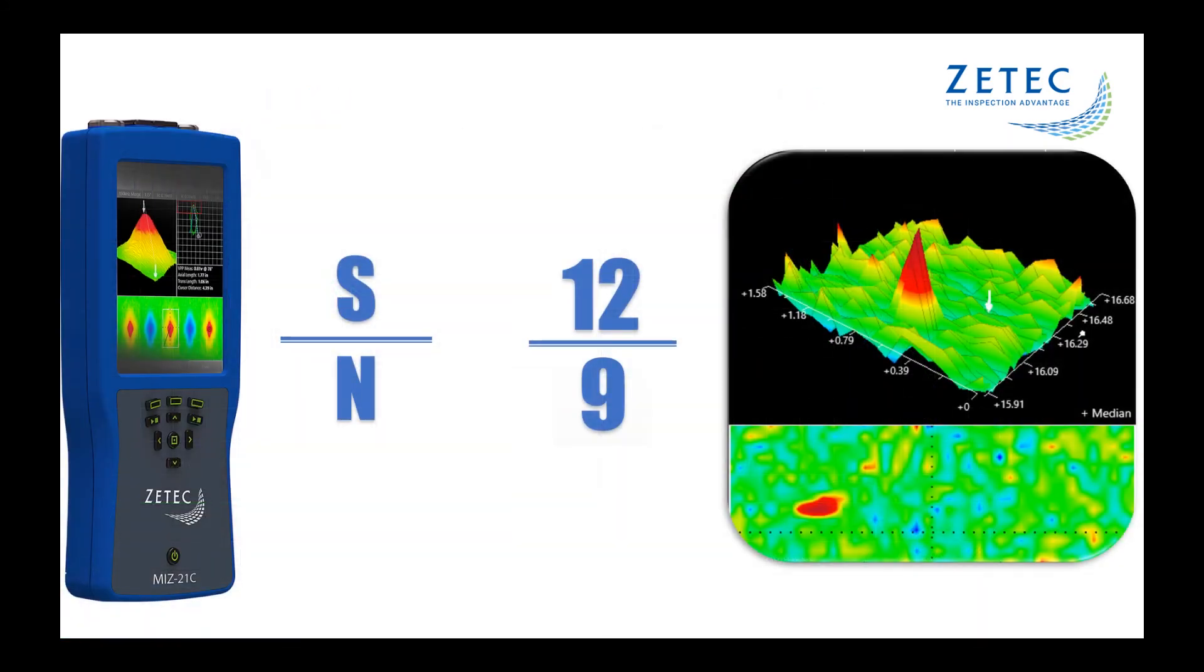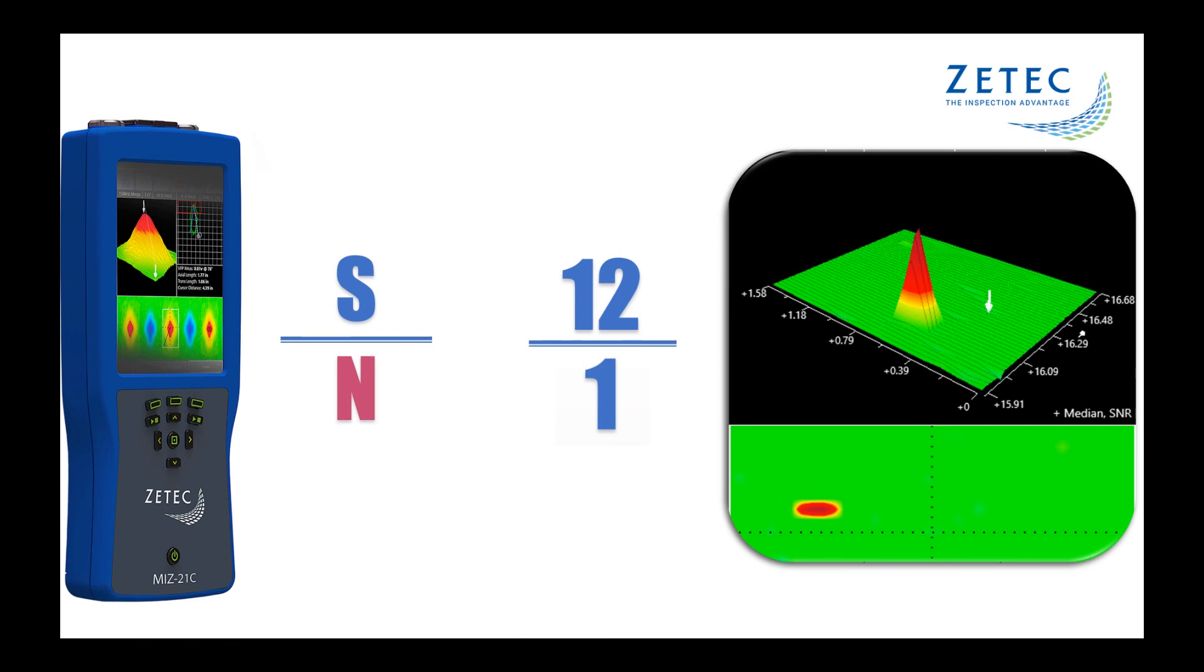As you can see, the SNR filter on the MIS-21C can reduce the N, or noise, part of the ratio without affecting the S, or signal, part of the ratio, therefore giving you a better SNR. Now you can increase the POD of the exam, you can look deeper into your data, and make the analysis of your data easier.